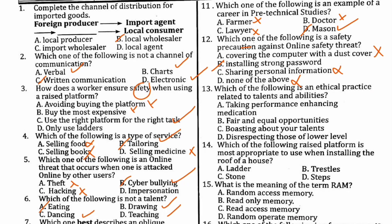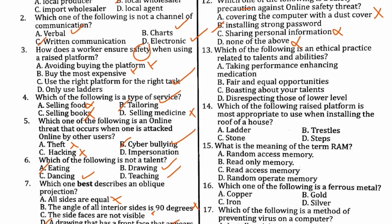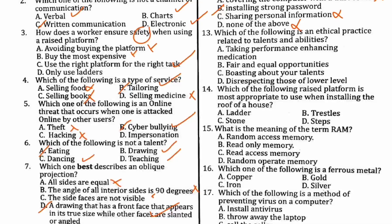Number thirteen: each of the following is an ethical practice. Remember we have ethical and unethical practices. Taking performance-enhancing medication — no. Boasting about your talent — not true. Disrespecting those of lower level — no. The answer is B: fair and equal opportunities.